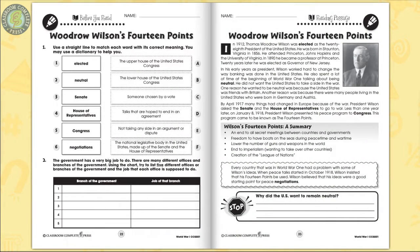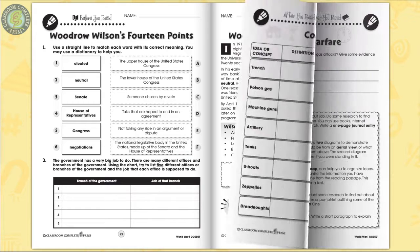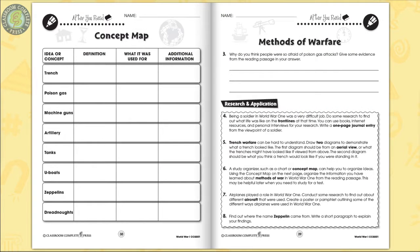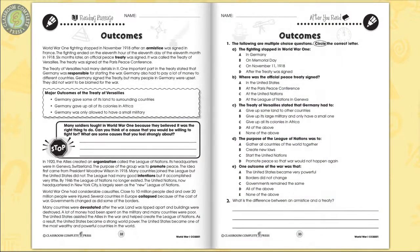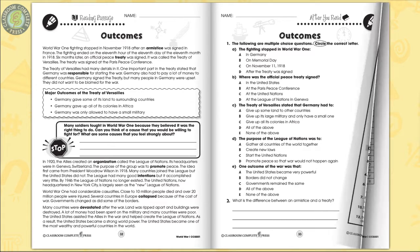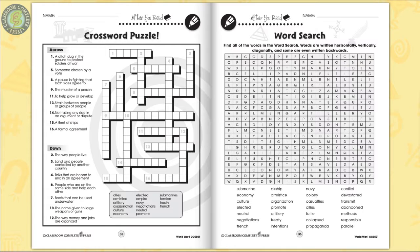Discover President Woodrow Wilson's 14-point peace program presented to Congress. Find out how the Industrial Era affected the weapons and methods of warfare used during the war. Finally, see how the Treaty of Versailles changed the geographic makeup of Europe.